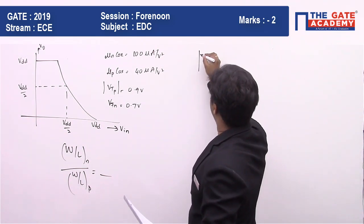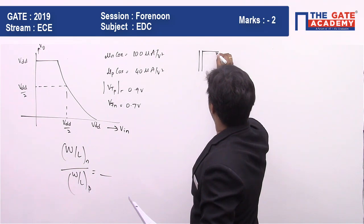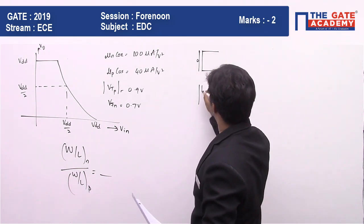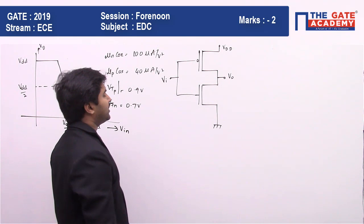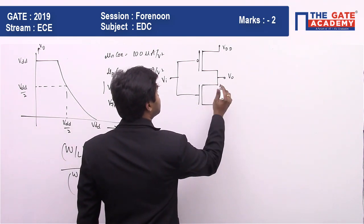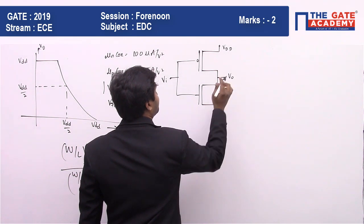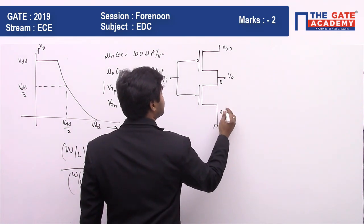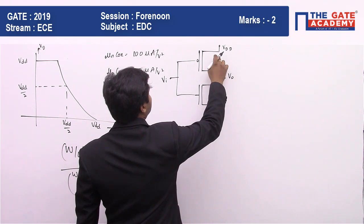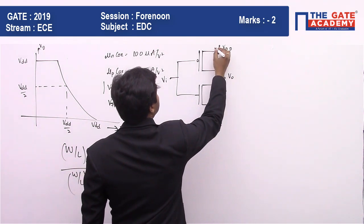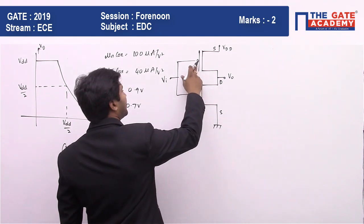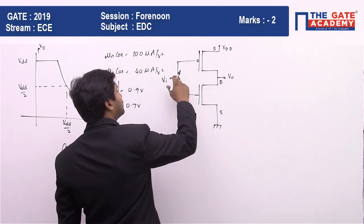The transistors we are going to have: one is PMOS and the other is NMOS. For NMOS, the drain is connected to the output, source is grounded, and the gate is the input. For PMOS, the source is connected to the battery, drain is connected to the output, and gate is connected to the input.